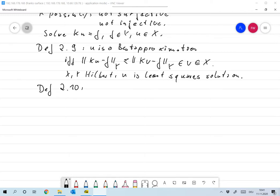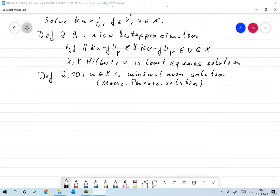So if we have multiple best approximations values, then we define a vector u in X is a minimal norm solution or Moore-Penrose solution if and only if